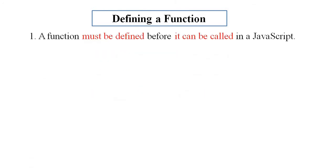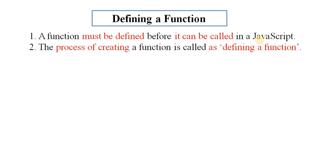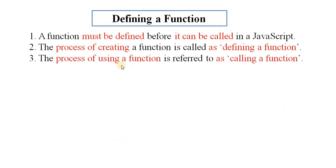A function must be defined before it can be called in JavaScript. A function definition is sometimes also termed a function declaration or a function statement. The common way to define a function in JavaScript is by using the function keyword followed by the function name. The process of creating a function is called defining a function, and the process of using a function is referred to as calling a function.